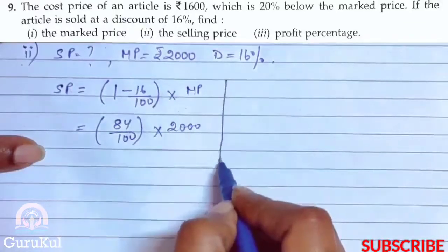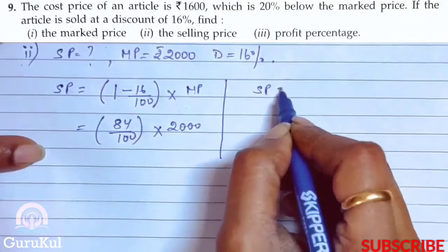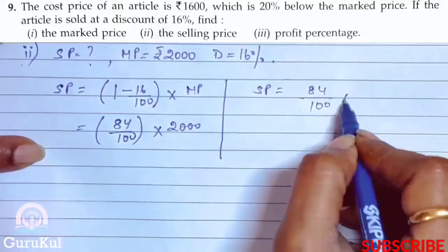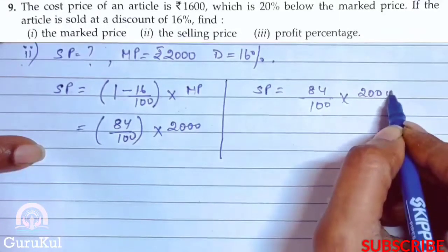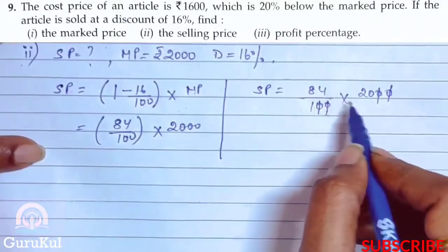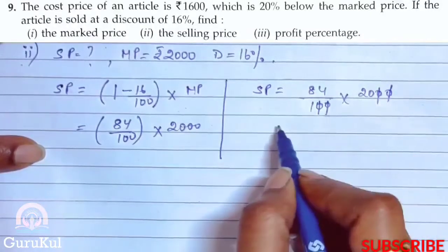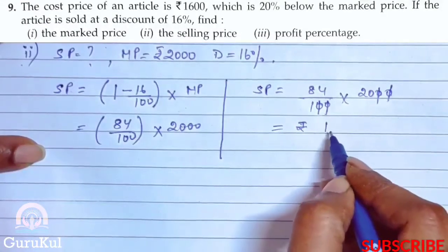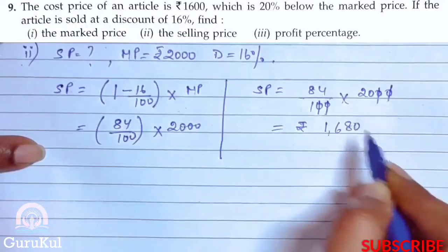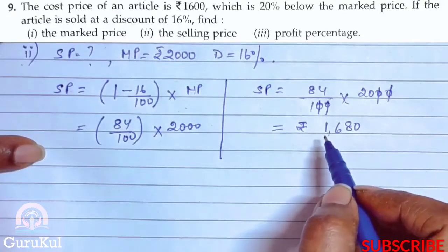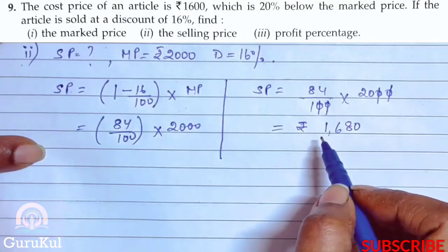SP equals 84/100 into 2000. Equal number of zeros get cancelled. So 84 into 20 gives us the amount of rupees 1680. That is our selling price, and we have solved the second part of question number 9.